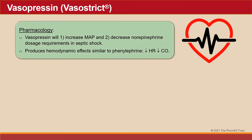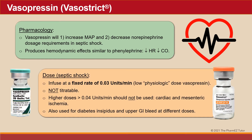Vasopressin will increase mean arterial pressure and decrease norepinephrine dose requirements in septic shock. It produces hemodynamic effects similar to phenylephrine. For septic shock, it is infused at a fixed rate of 0.03 units per minute — a low physiologic dose — and is not titratable. Higher doses above 0.04 units per minute should not be used due to cardiac and mesenteric ischemia. Vasopressin is also used for diabetes insipidus and upper GI bleed at different doses.